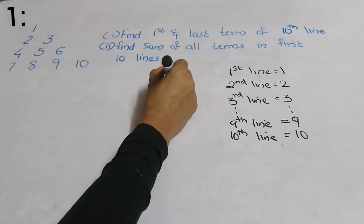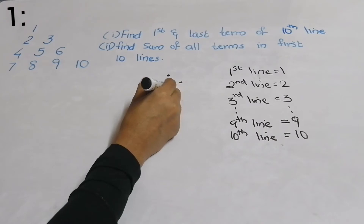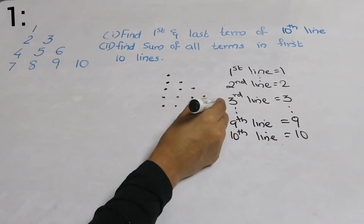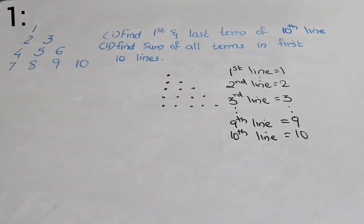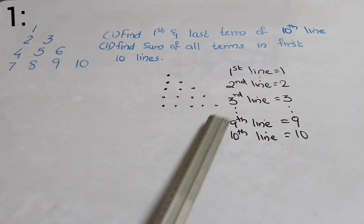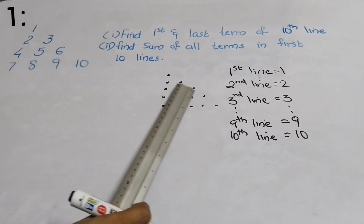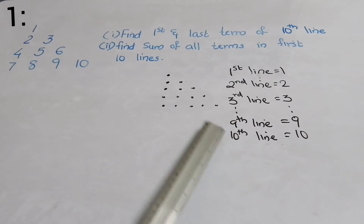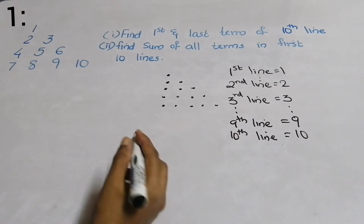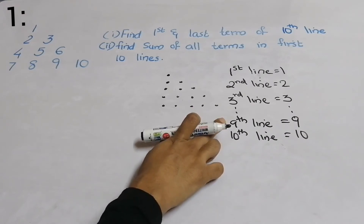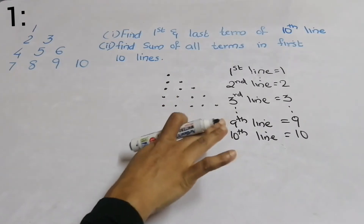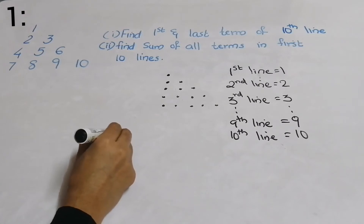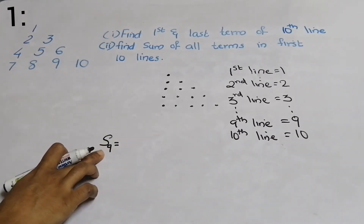So the meaning of this is: first line has one term, second line two terms, third line three terms, fourth line four terms, and so on. We have to find out how many terms are there in total. One term plus two terms plus three terms plus four terms — we sum up all these numbers up to the ninth line and also up to the tenth line. Let me first sum up to the ninth line. S of 9, the sum of terms up to the ninth line.